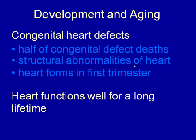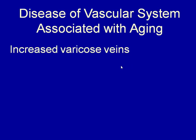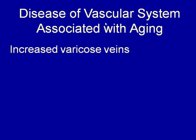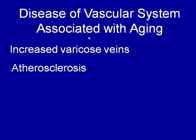The heart typically functions well for a long lifetime, particularly with a little care. Vascular diseases associated with aging include varicose veins — the longer you live, the more opportunity for blood pooling and valve damage. Exercise and even plain walking help reduce the risk. Atherosclerosis — loss of arterial elasticity and stretchiness — happens to some degree with aging as elastic tissue is less effectively replaced. Hypertension accelerates atherosclerosis, so avoiding high blood pressure helps forestall this.